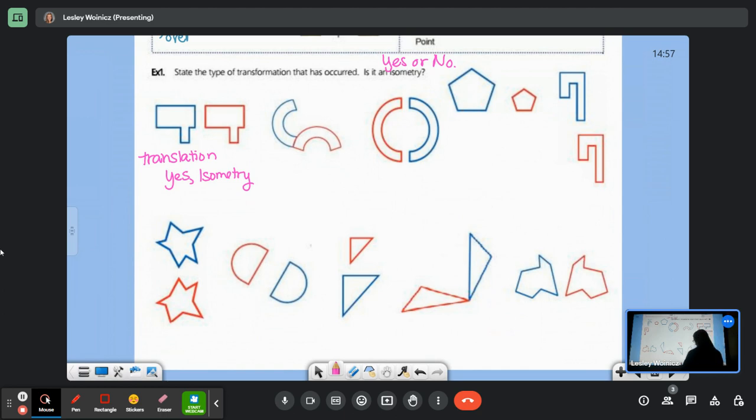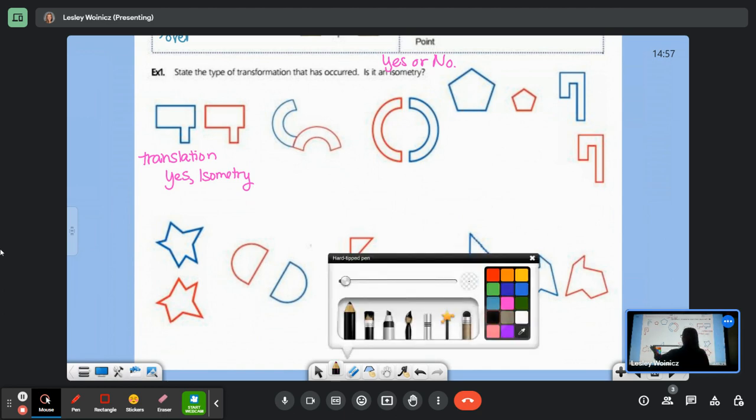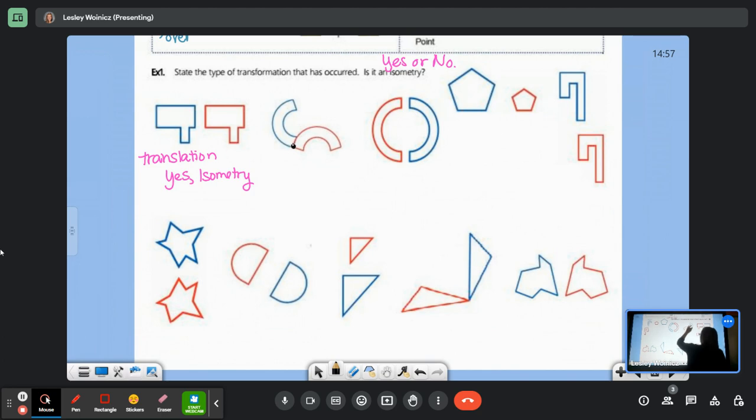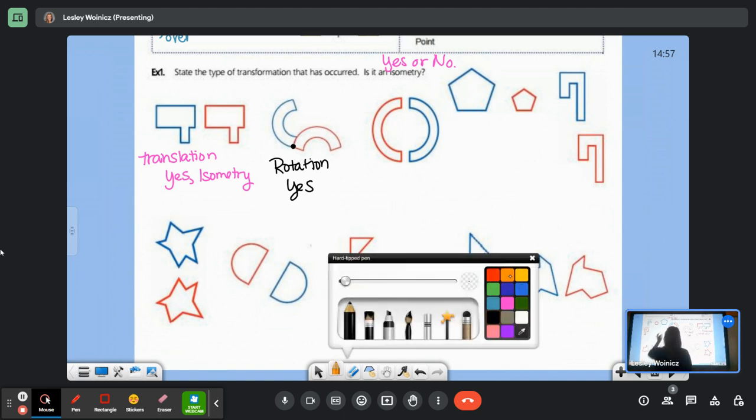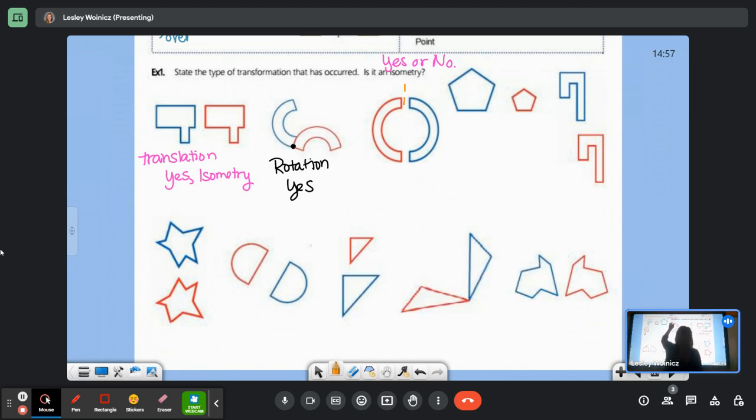What about the next one? It's a rotation. You can see that it's pivoting on this point right here. Is it an isometry? Yeah. Correct. Next one, you can see the line of reflection right here. Go ahead and draw that in. Is it an isometry? Yeah.